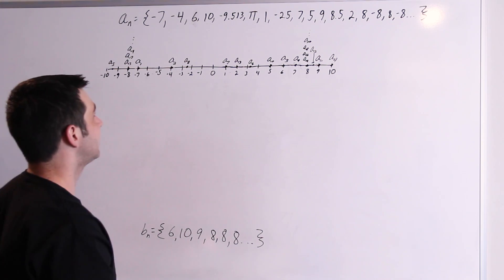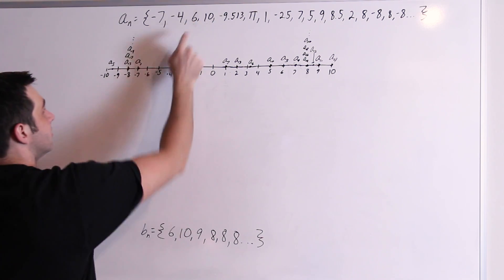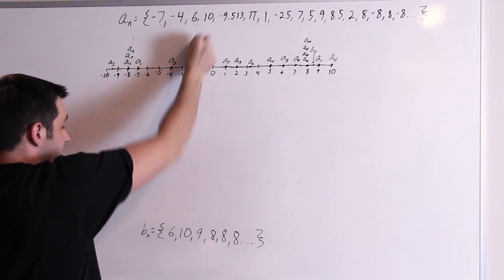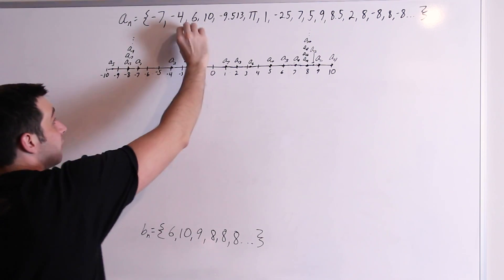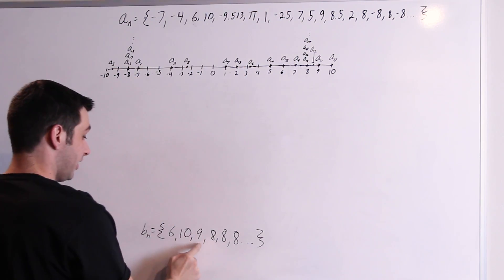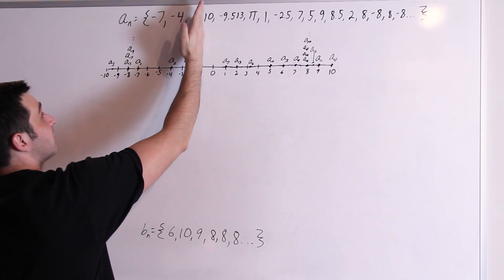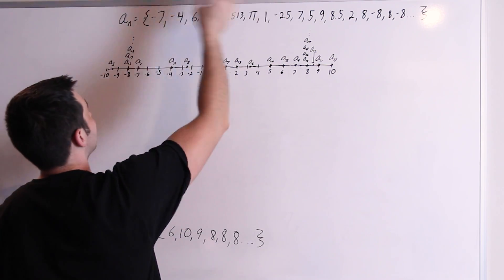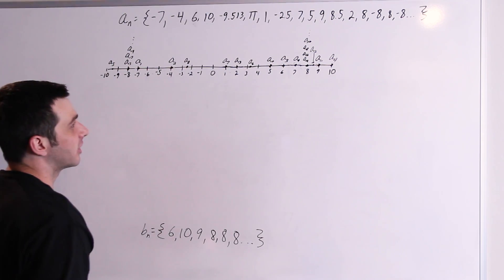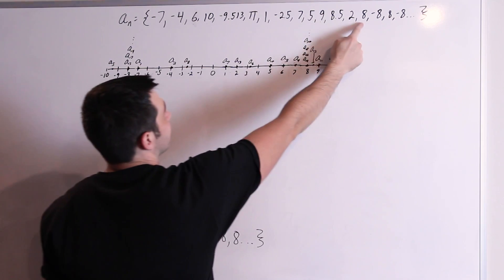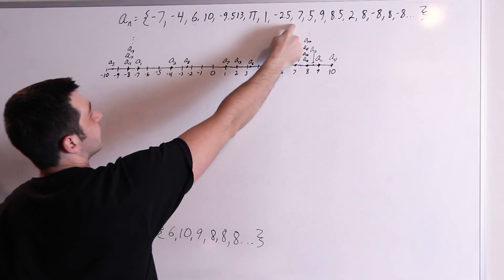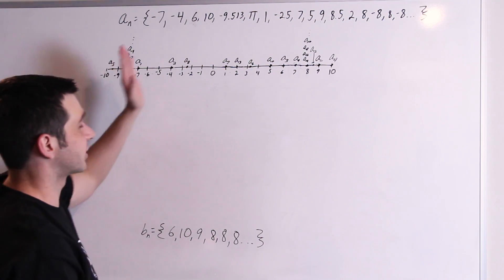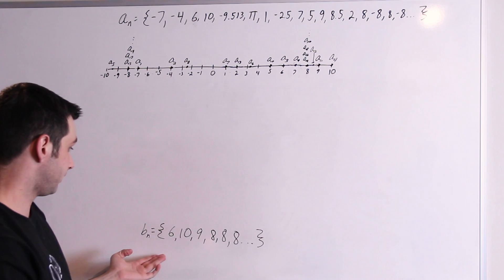By the way, for a subsequence, you can't just pick 10, 10, 10, 10 and throw that in here. You use this one 10, then you have to move on. The next one in this sequence has to be something that comes later. So you can't go backwards or anything like that. You can't grab this 8 and then grab a 7 before it. It's just got to go in order. But otherwise, we're good — we've got our subsequence.